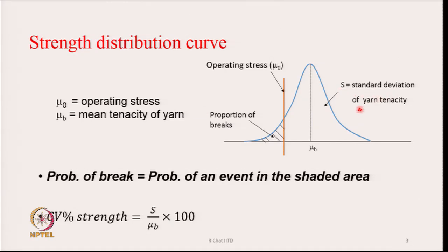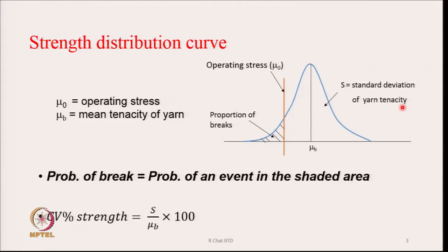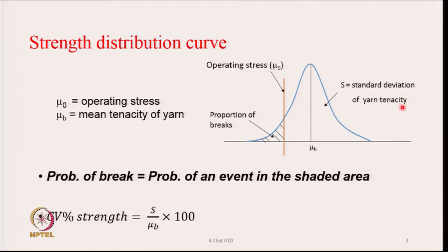S represents the standard deviation of yarn's tenacity, so the variability part is represented by S. Any yarn that we produce will always have a strength that follows a kind of distribution as shown here — the strength will never be uniform. If we take 100 or 500 readings and plot a distribution diagram of strength or tenacity, we will get a graph like this. We will see that there are segments of yarn which are quite strong, falling in one zone, and segments which are weak, falling somewhere else, with strengths of different magnitudes. This is the natural variability present in the yarn in the strength parameter.